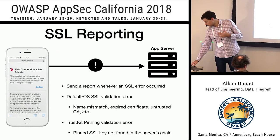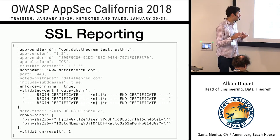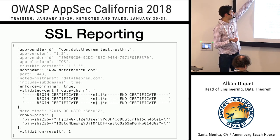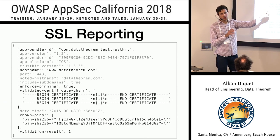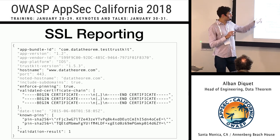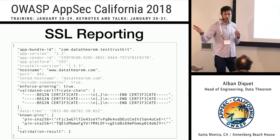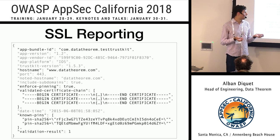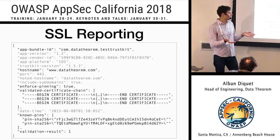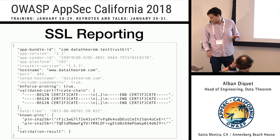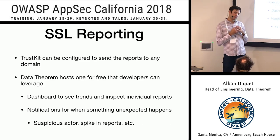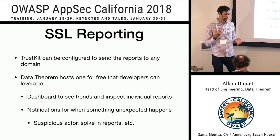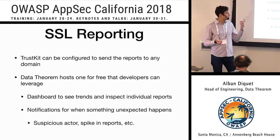A report looks like this: there's some data about the app, which app it is, but mainly the hostname the app tried to connect to, and then the certificate chain the app received when connecting to that server — which is probably not the right one; it's probably something in the middle trying to mess with your connection. That's basically a report you get when something goes wrong with TLS, so you can see what's going on across your entire user base.